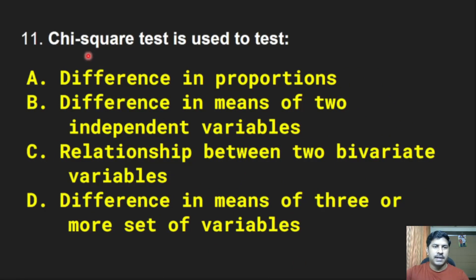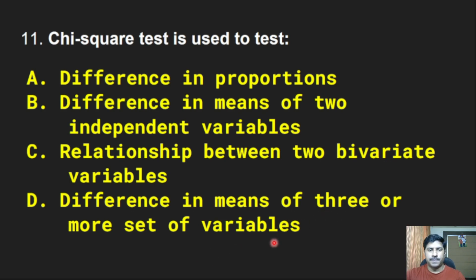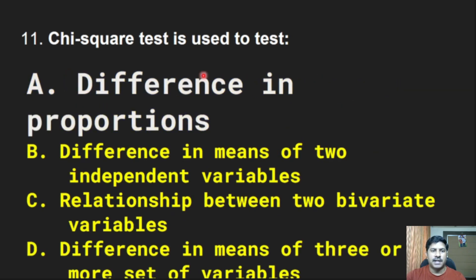Next question: Chi-square test is used to test — difference in proportions, difference in means of two independent variables, or difference in means of three or more sets of variables? Chi-square test is used to test difference in proportions.